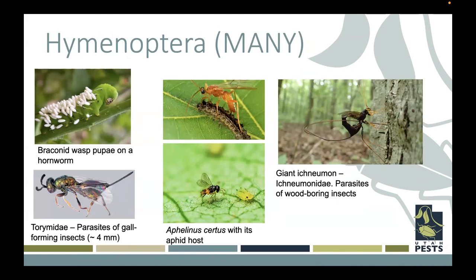If you ever see a wasp in your garden that doesn't look like a paper wasp, odds are it's something highly beneficial to the landscape. Over 99% of wasps do not have the ability to sting. If you ever see a caterpillar with a bunch of white fuzzy structures on them, those are wasp pupae. Wasps are very, very abundant — probably the most impactful and important parasitoids of other insects.